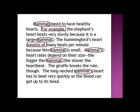And the last sentence: 'The long-necked mammal's heart has to beat very quickly so the blood can get up to its head.' That one relates back to the sentence about all mammals too. So the main idea is this one — it's the only one that connects to almost all of the other sentences. Now that we've found the main idea, we can underline the important facts. I see three different types of animals here — mammals — and each of them is important because they're treated equally. So I'm going to underline the part about the elephant, the part about the hummingbird, and the part about the giraffe as my important facts.